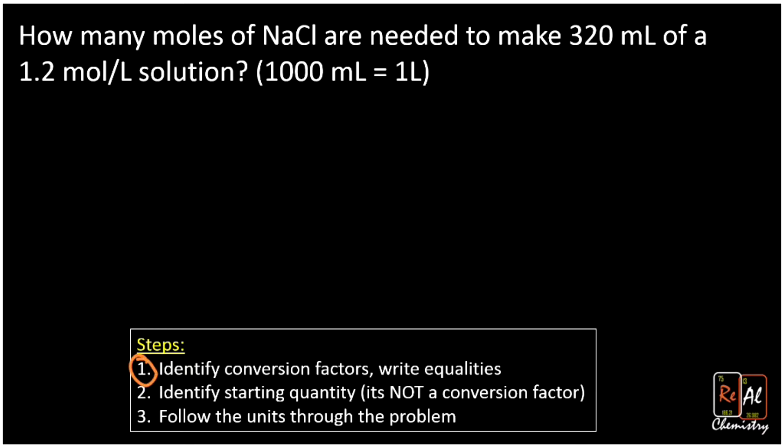So step one is identify our conversion factors. Remember, when we identify our conversion factors, we're looking for things that have multiple units with the number. Here we have 320 milliliters, so that's just one unit. On the other hand, over here, our molarity, 1.2 moles per liter has two units in it. And that means that this guy is secretly our conversion factor. It's going to go between moles and liters. So now we're going to write the equality. The equality that we can add as a conversion factor here is 1.2 moles equals one liter. So we've identified the conversion factors and we've written equalities.